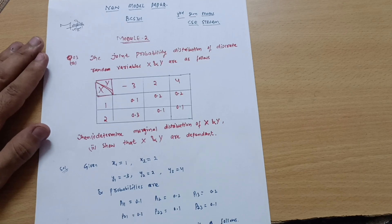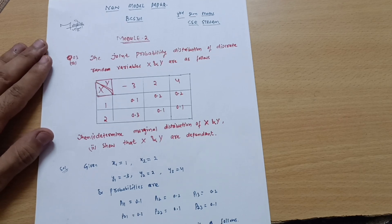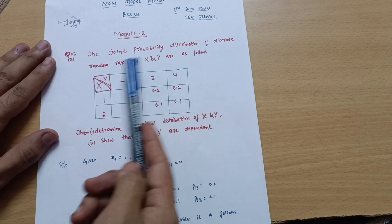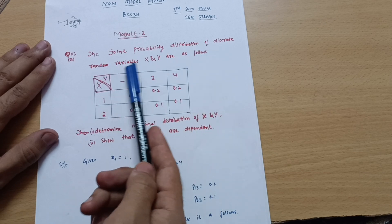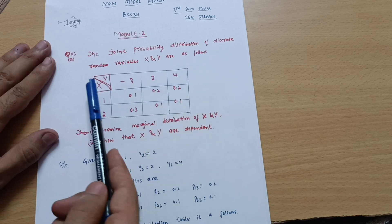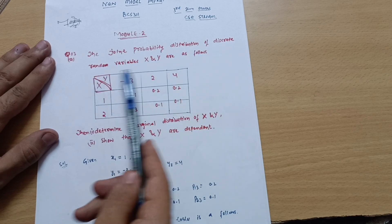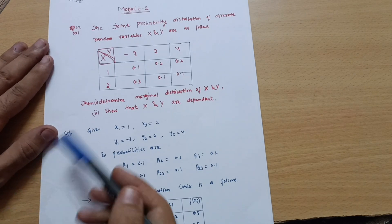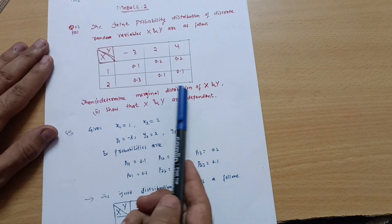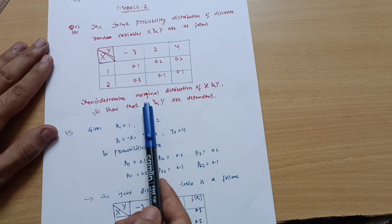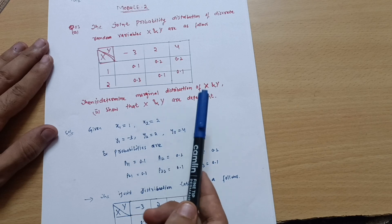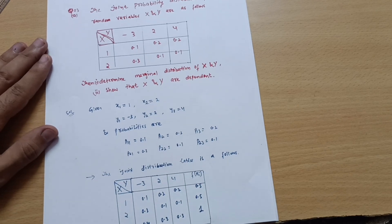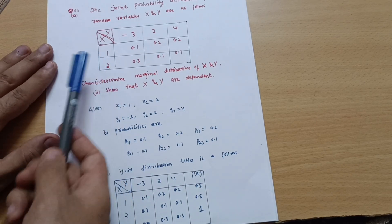The joint probability distribution of discrete random variables x and y is given in the problem as a probability distribution table. What we have to determine is: first, the marginal distribution of x and y, and second, show that x and y are dependent.